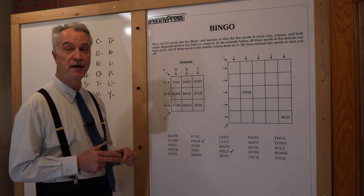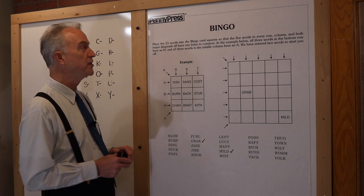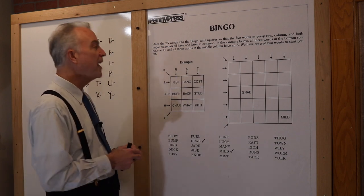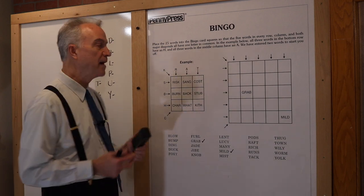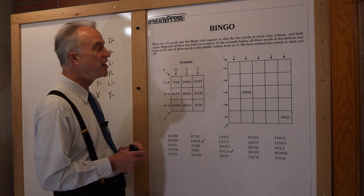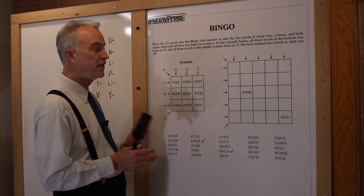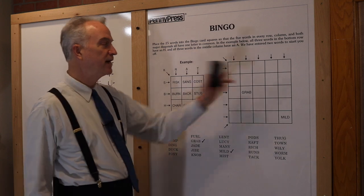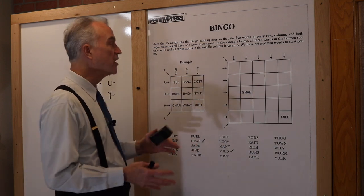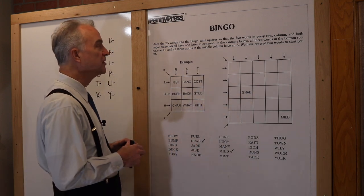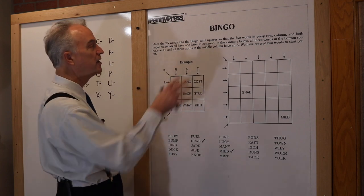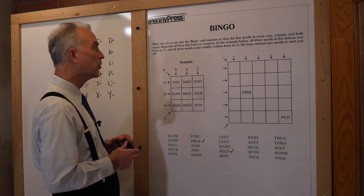The puzzle for this episode is quite simply called Bingo. This is not a number puzzle — we're going to be working with words and letters and filling this grid in. It is a 5x5 grid. The first thing, as we always do, is to jump right in and go through the limited instructions we have here for Bingo.